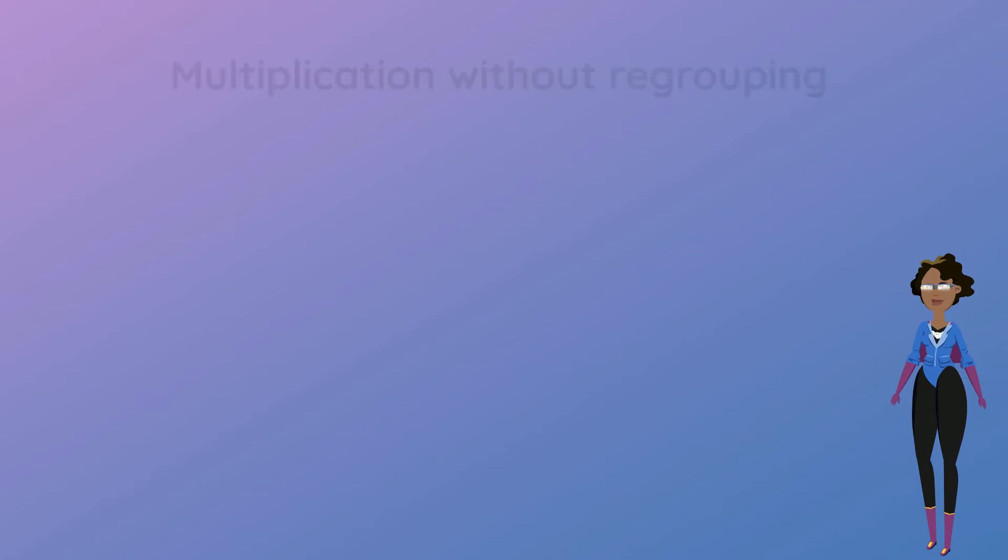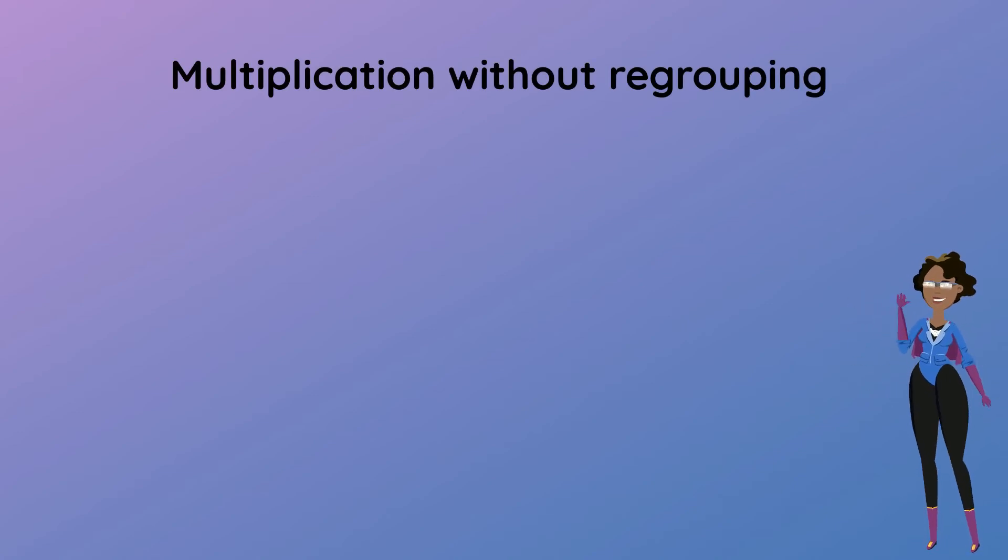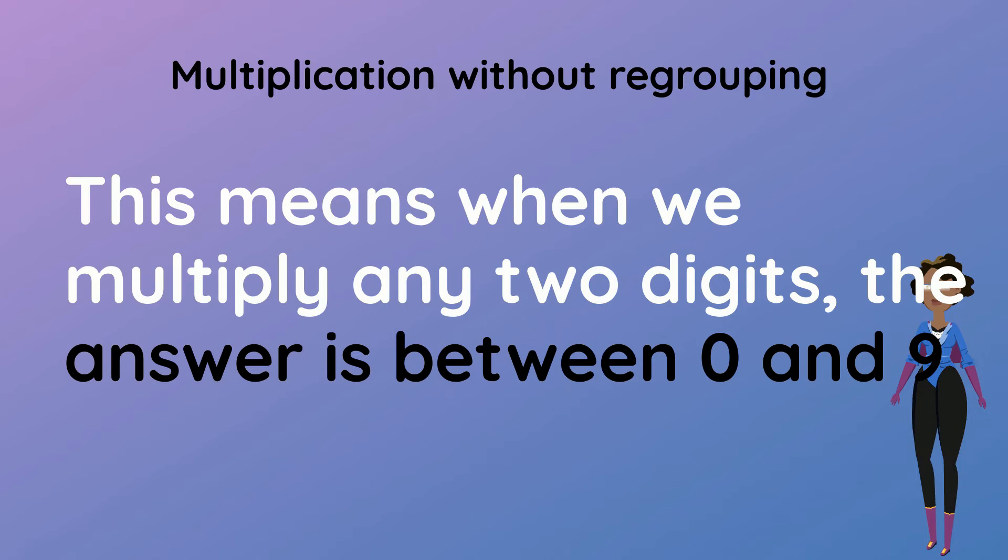Let's move on to multiplication without regrouping. Multiplication without regrouping means when we multiply any two digits the answer is between 0 and 9.